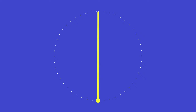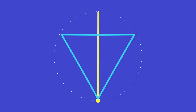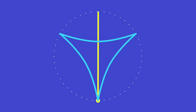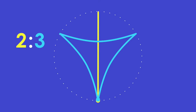If we want three equal beats, last time we used a triangle, but this time we're going to use a three-pointed star like this. Now we have a two against three pattern.